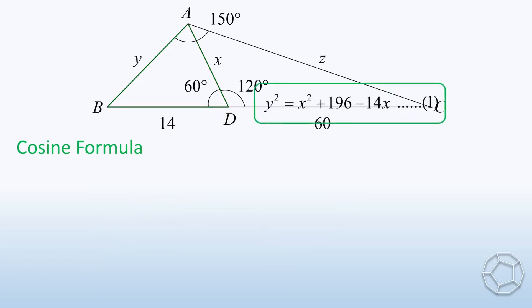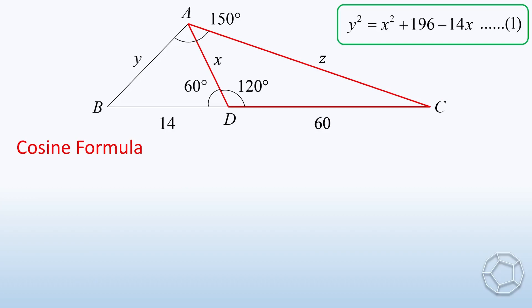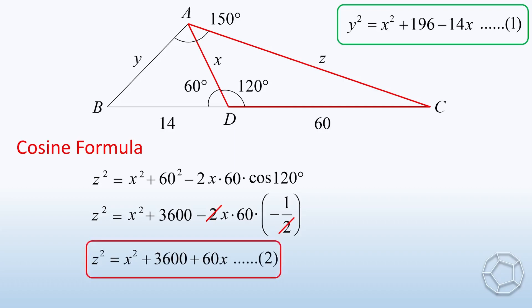Now, let's look at the red triangle. Again, by the cosine formula, Z squared is equal to X squared plus 60 squared minus 2 times X times 60 cosine 120 degrees. Here, 60 squared is equal to 3600. And cosine 120 degrees is equal to negative 1 over 2. The structure of this equation is very similar to the previous one. Now, the right-hand side becomes X squared plus 3600 plus 60X. This is our equation 2.